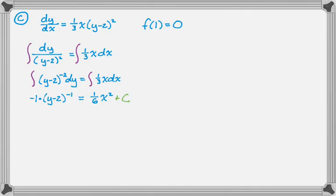I think that now is a good time to solve for c. So I'm going to use the fact that f of 1 is 0 to say that negative one, if you plug in 0 for y, you get just negative 2 to the negative first is just one over negative 2. So the left hand side becomes negative one over negative 2, which is one half equals one sixth plus c. One half is three sixths. If I subtract one sixth, I get two sixths. So c is one third. So let's substitute that back in.